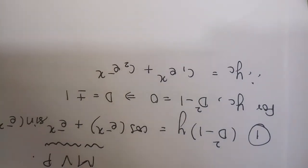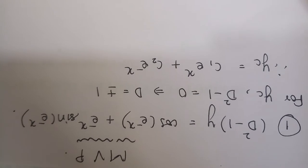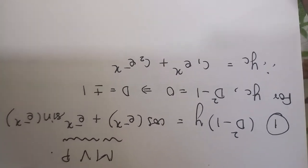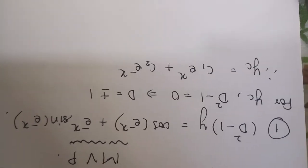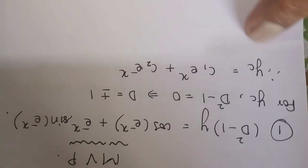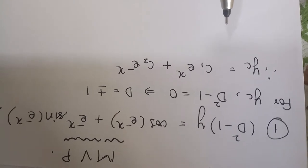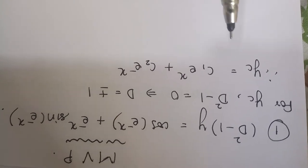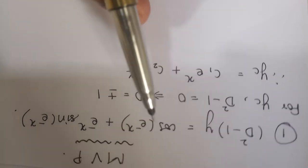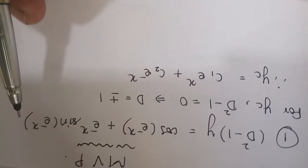So dear students, today we are going to learn something about MVP, that is Method of Variation of Parameters, and to explain that I have taken the first classwork example from our notes. The equation is d-squared minus 1 times y equals cos of e raised to minus x, plus e raised to minus x into sin of e raised to minus x.